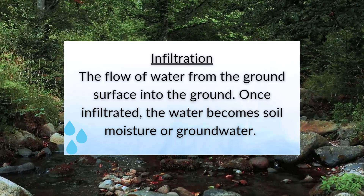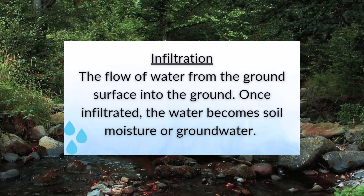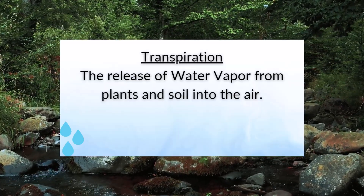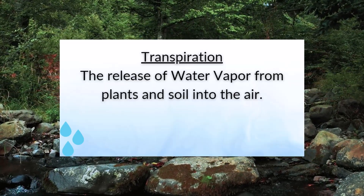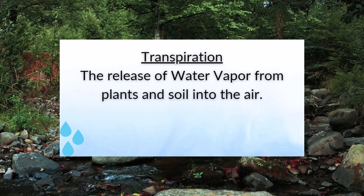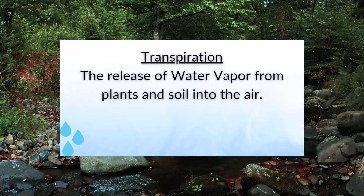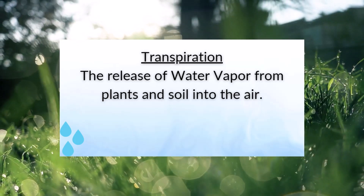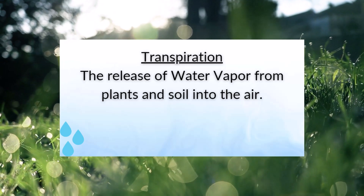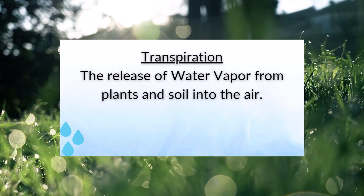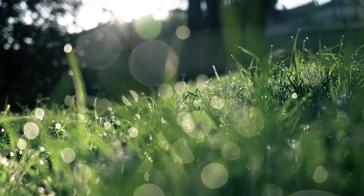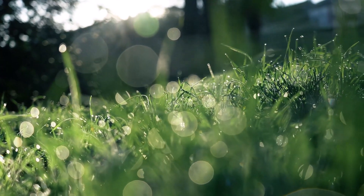This is known as percolation. Another process occurs called transpiration, which is the release of water vapor from plants and soil into the air. We know some natural organisms such as plants, animals, and humans will consume water, but some of that water will be released from the plants into the air. Some of the water may be consumed by plants, but the rest is released through transpiration.